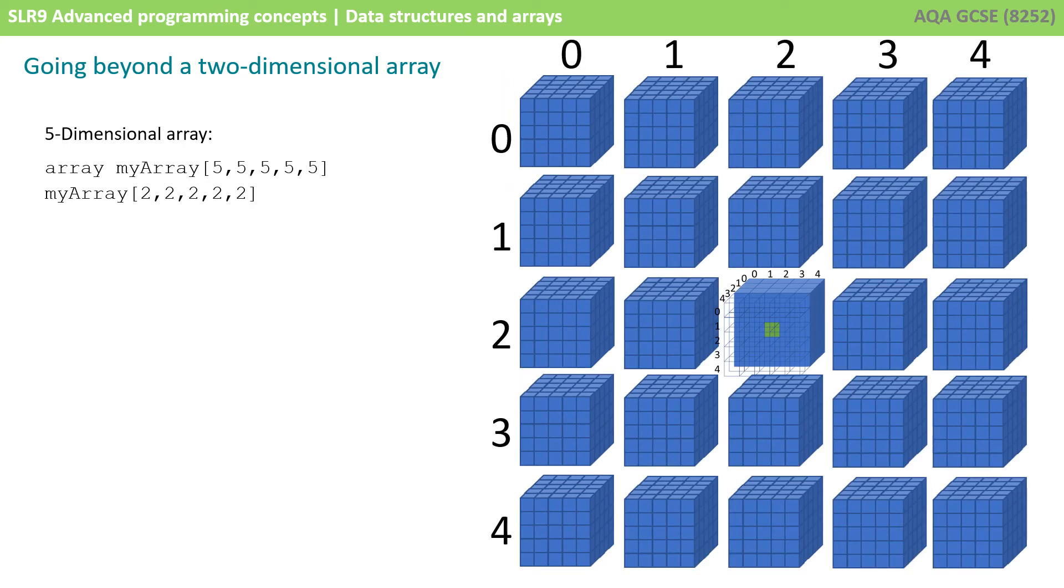In a similar manner, we could carry on visualizing fifth, sixth, seventh, and higher-dimensional arrays, although this does get a little confusing. So, here we have a fifth-dimensional array with one suggestion of how you could visualize it. You'd have to supply five index values to access any particular element in a five-dimensional array. The first two here could be telling us the row and the column of the cube to access, and the final three, the row, column, and depth of that cube.